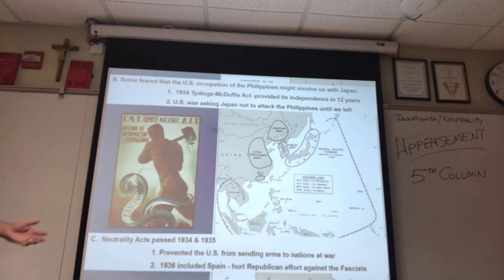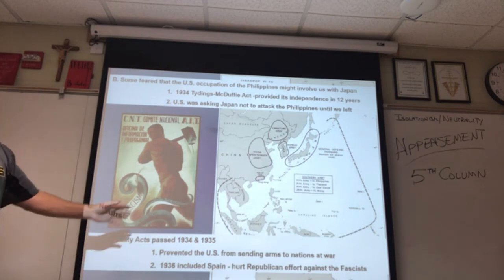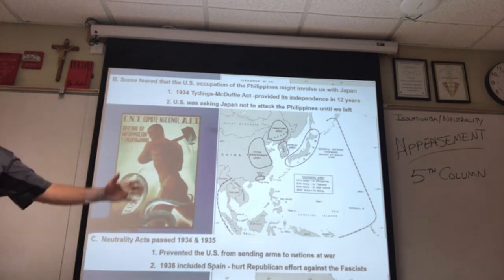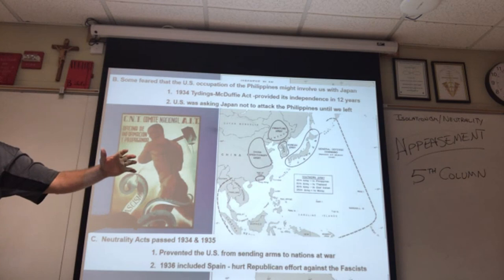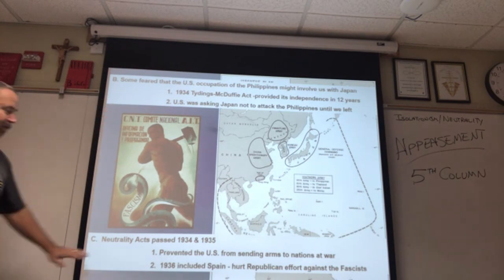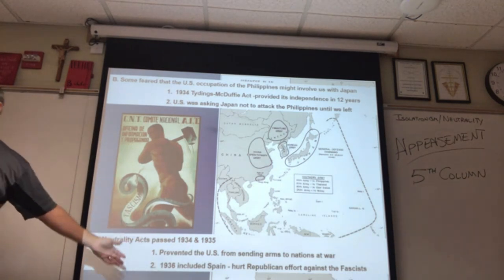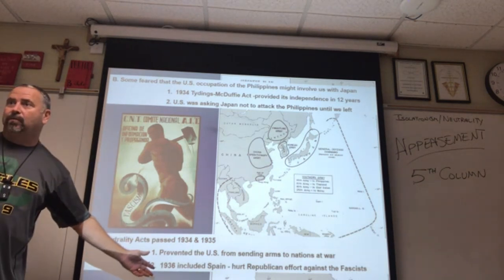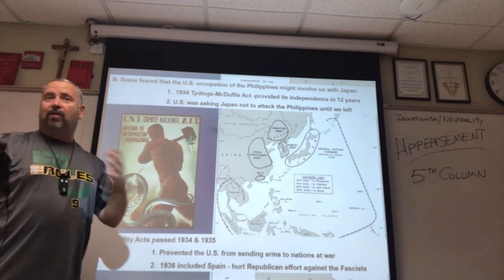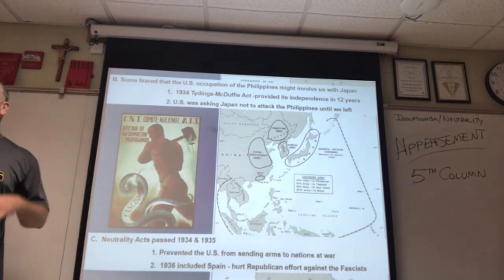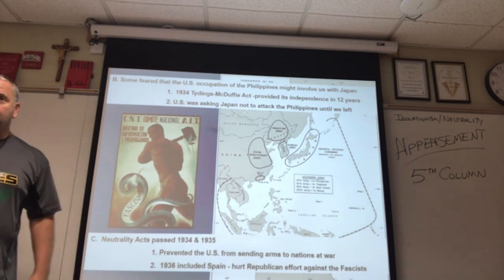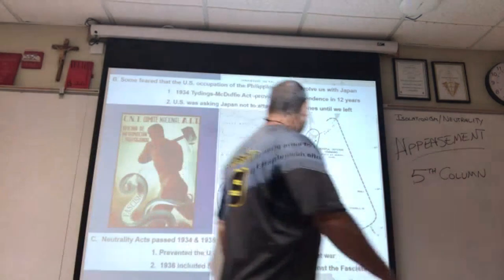By 1934-35, the U.S. is prevented from selling arms to nations at war. This keeps us neutral — our guns aren't being used by either side — and it includes Spain, who is in a fight for her life against the fascists. These laws also prevent Americans from going overseas and fighting on behalf of those fighting back.